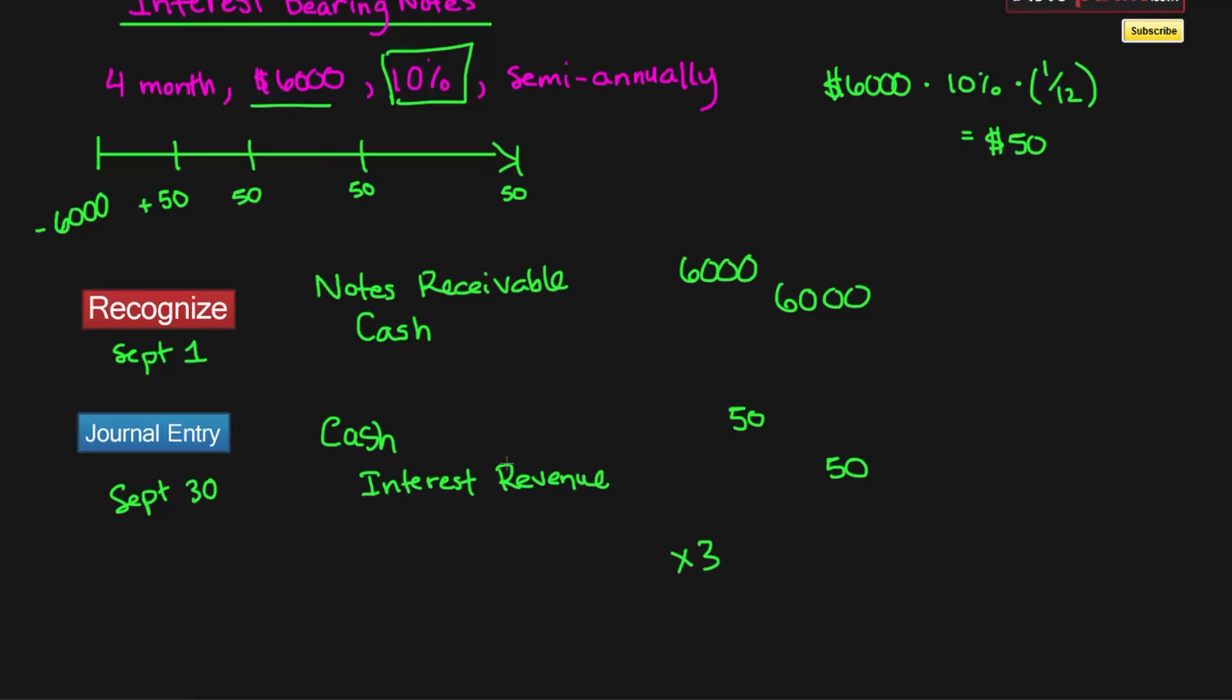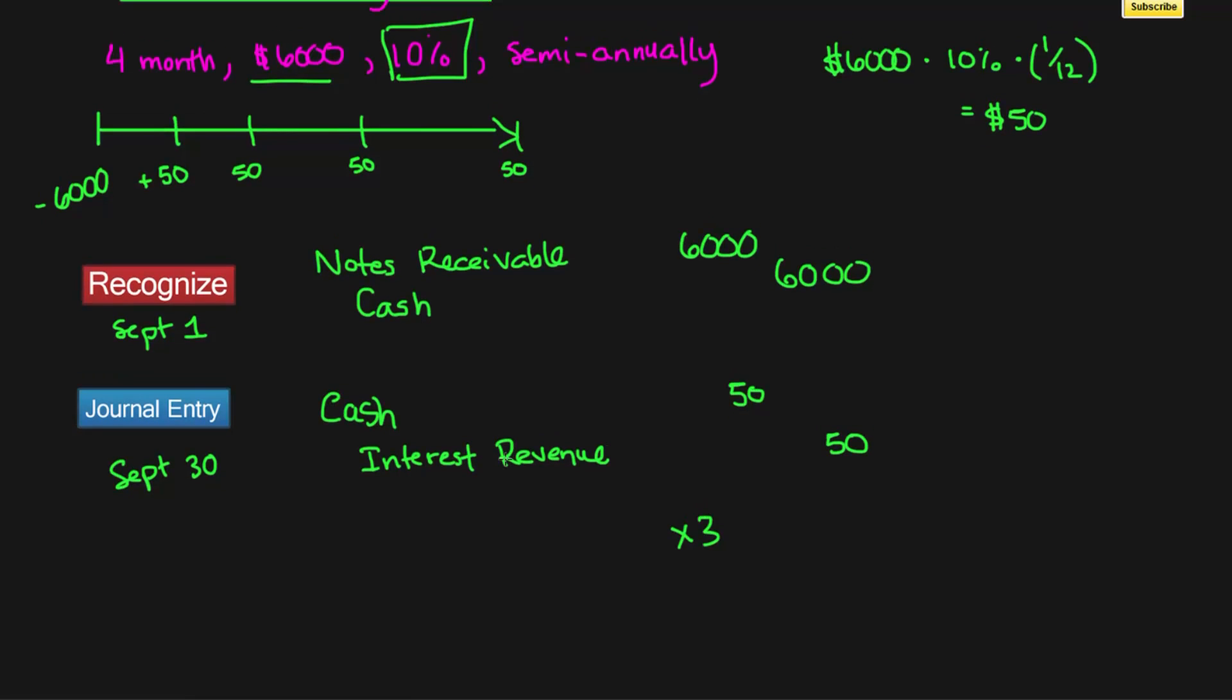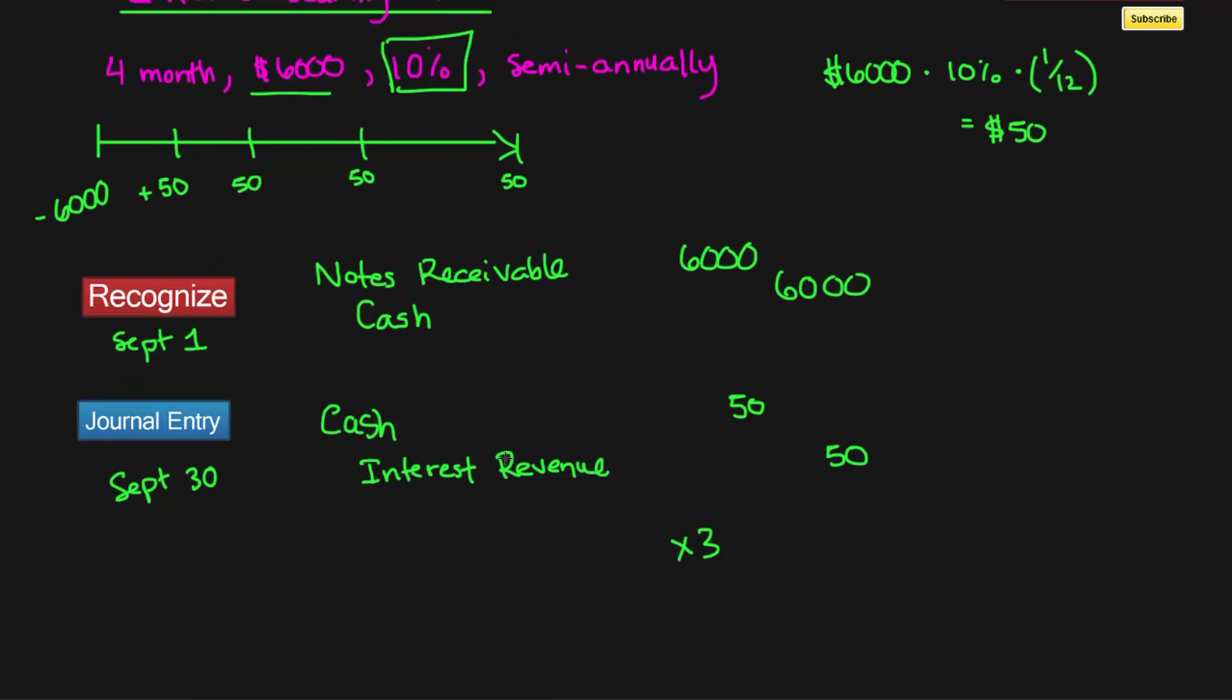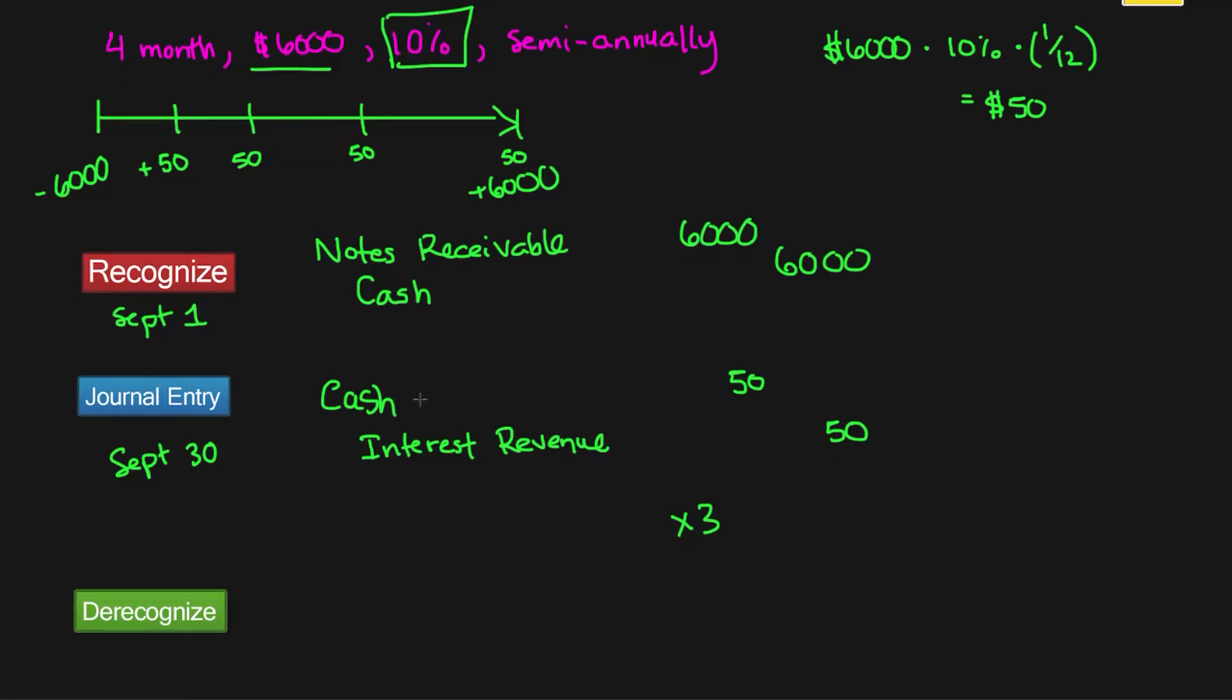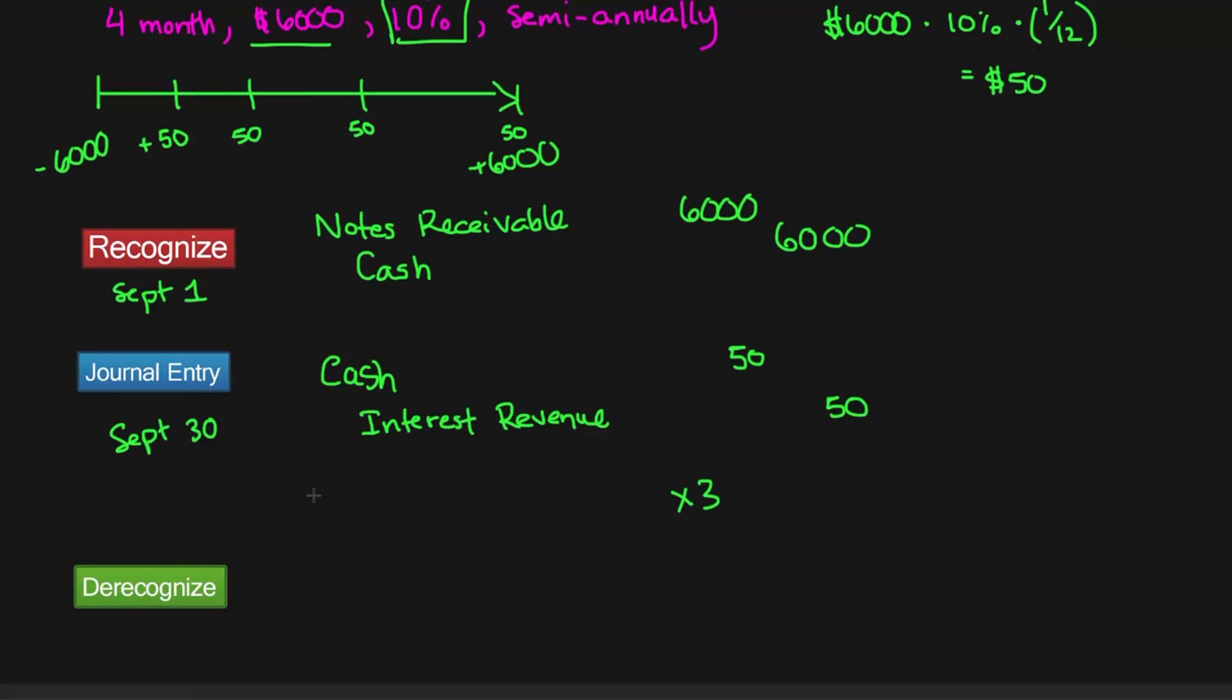The final part is to de-recognize the loan. I've got a button for that too, so I'm going to locate it below the journal entry. We need to recover the $6,000 that we originally lent out. Now we can do this one of two ways.